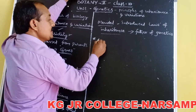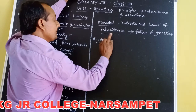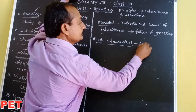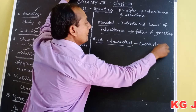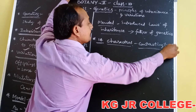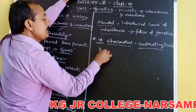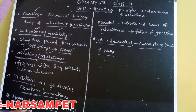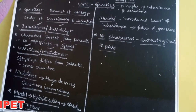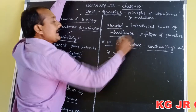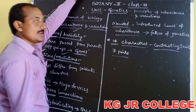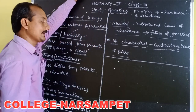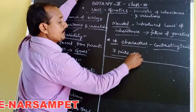Mendel chose 14 contrasting traits, generally appearing in seven pairs. Seven pairs of contrasting characters were used in garden pea plant experiments conducted over seven years, through which he introduced the laws of inheritance and is regarded as the father of genetics.